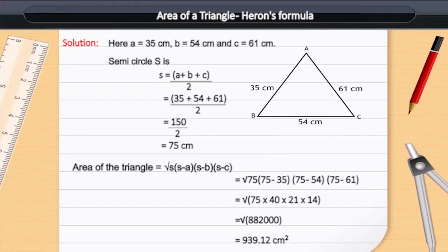Semi-perimeter S is A plus B plus C divided by 2, is equal to 35 plus 54 plus 61 divided by 2, is equal to 150 divided by 2, is equal to 75 cm.